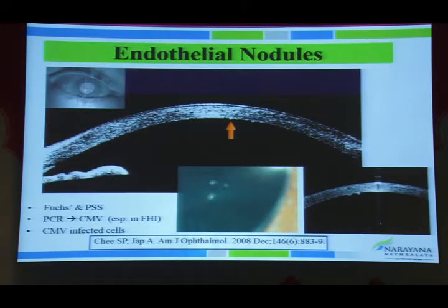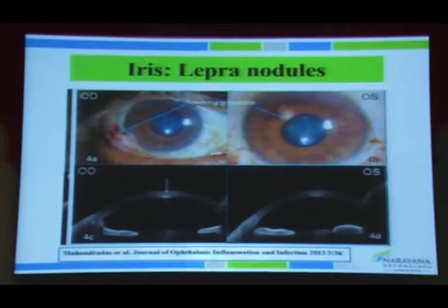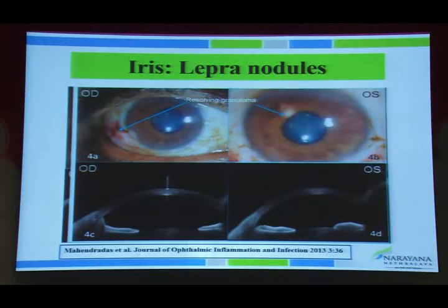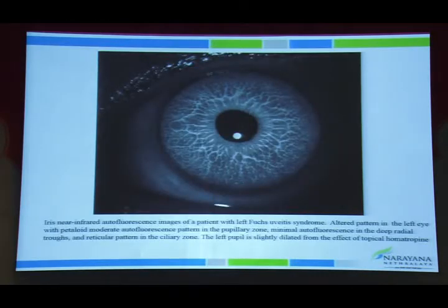Anterior segment OCT can be used to study structures such as endothelial keratic precipitates in CMV anterior uveitis and iris nodules in leprosy-associated pan-uveitis. A recent advance is iris infrared autofluorescence, where iris changes can be studied and documented with serial photographs. In Fuchs' uveitis syndrome, it shows an altered pattern in the affected eye with a petaloid pattern of hyperfluorescence at the pupillary margin and a reticular pattern in the ciliary zone.